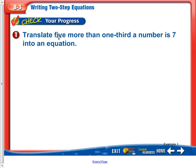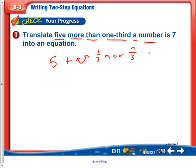Translate: 'five more than one-third a number is seven.' Five more — then 'than' tells us to flip it. One-third a number: we can say one-third n, or we can say n divided by three. 'Is seven.' So let's rewrite it in the correct order: one-third n plus five equals seven.